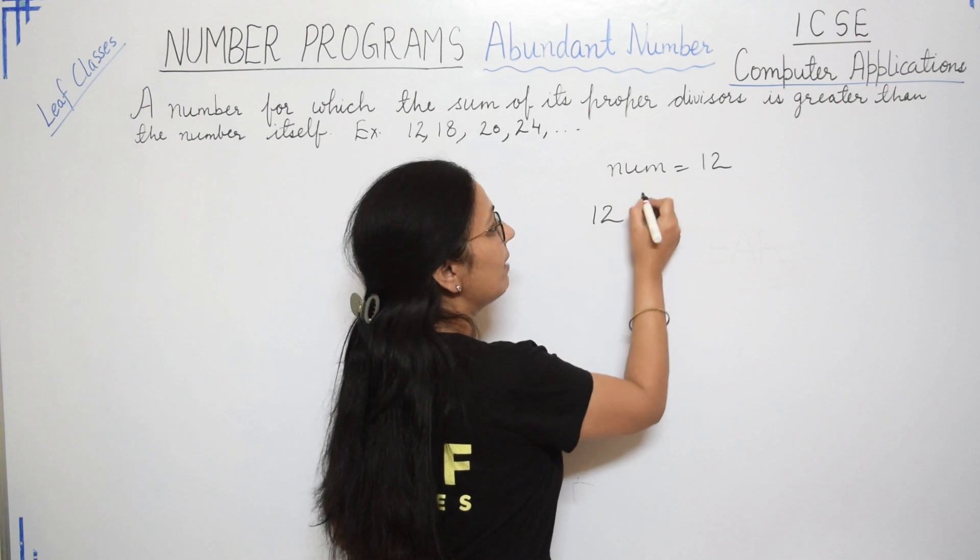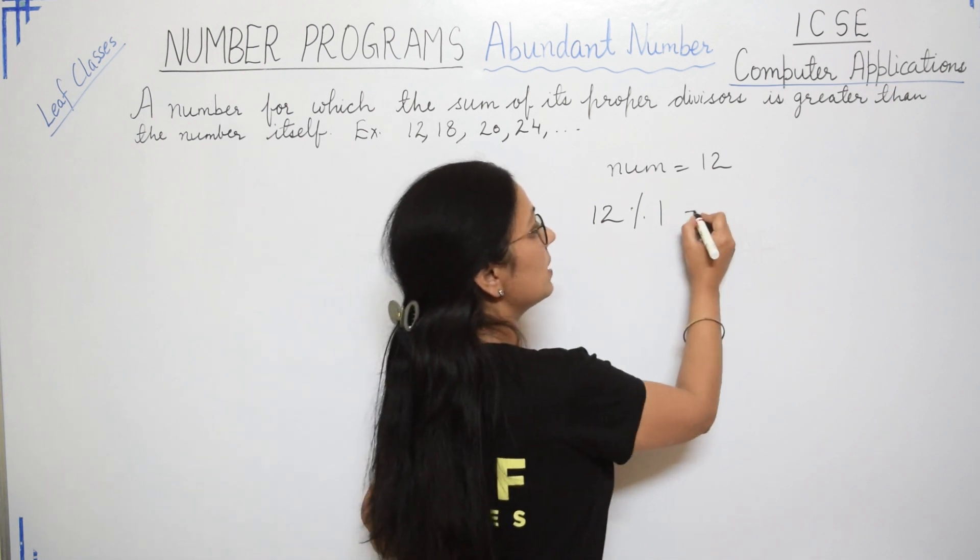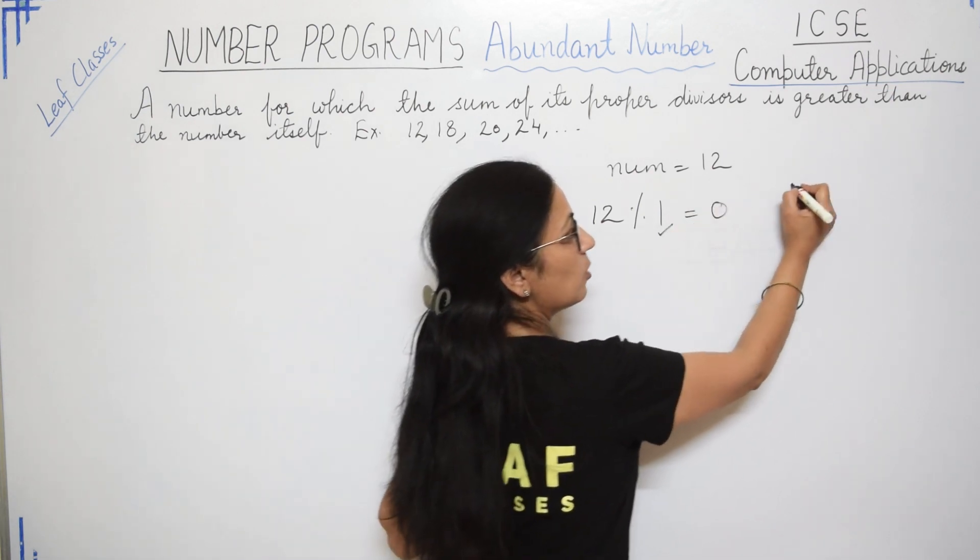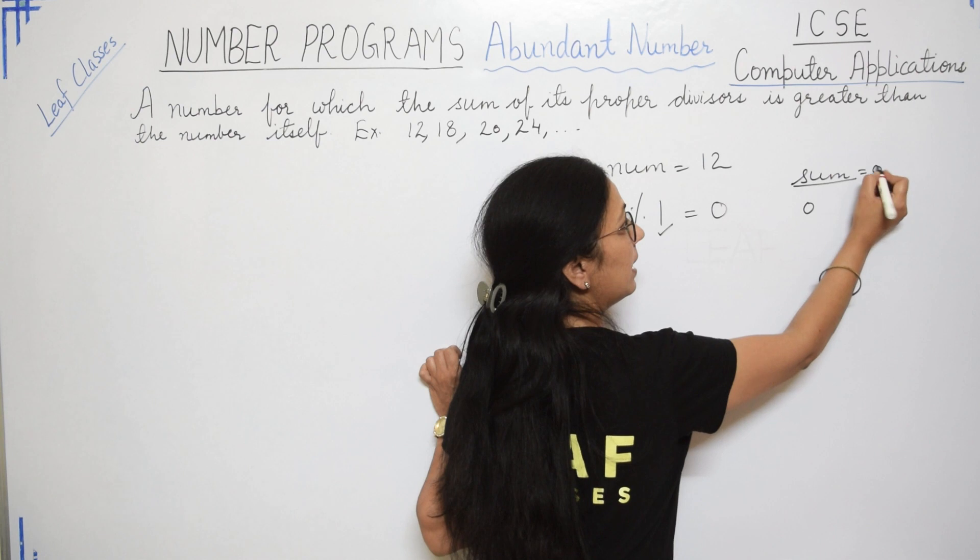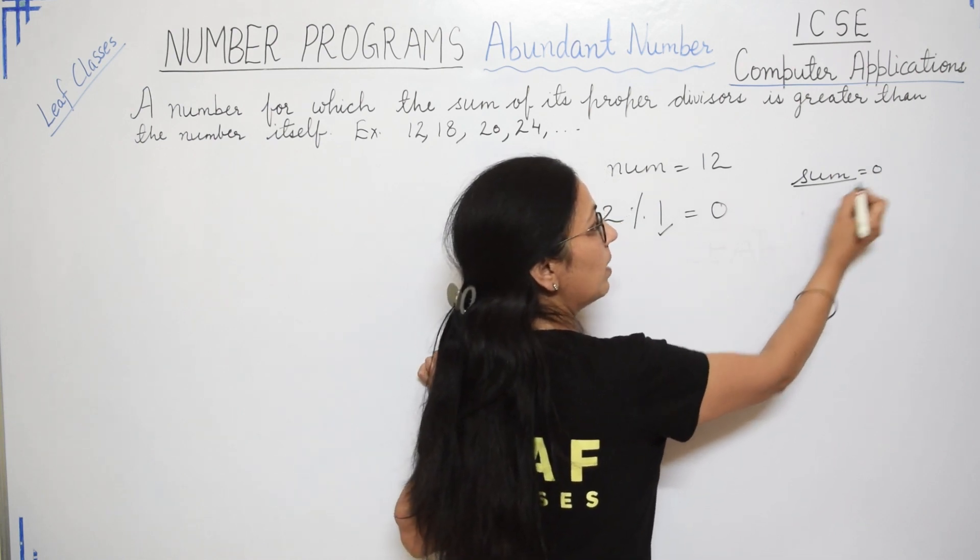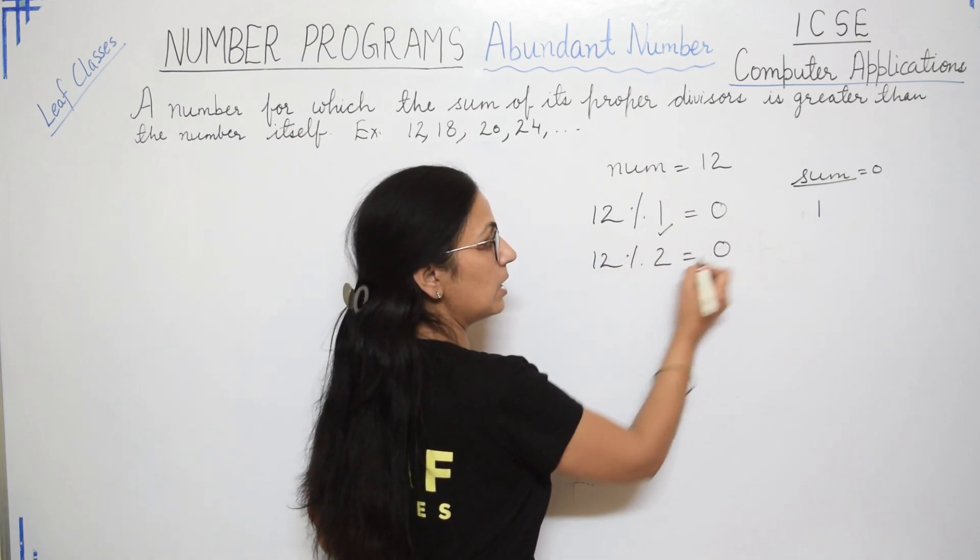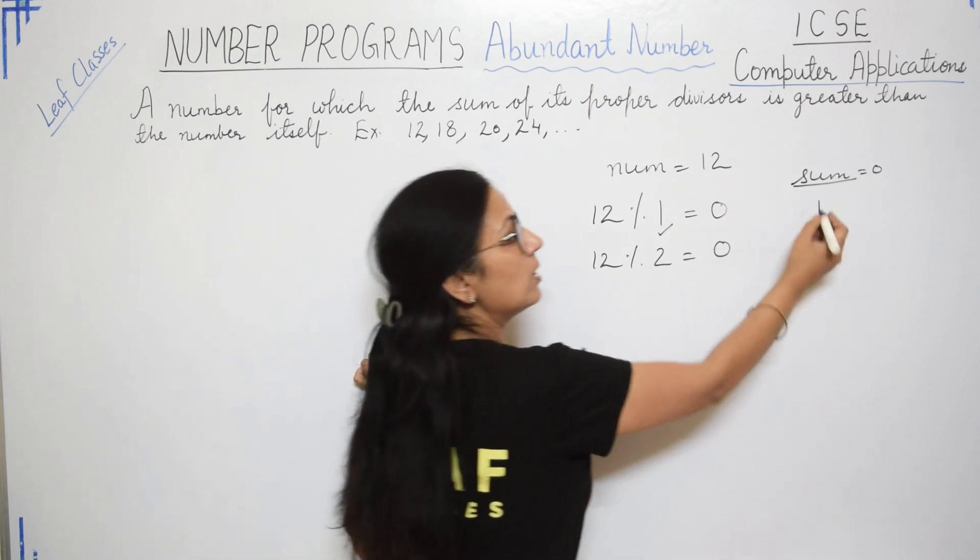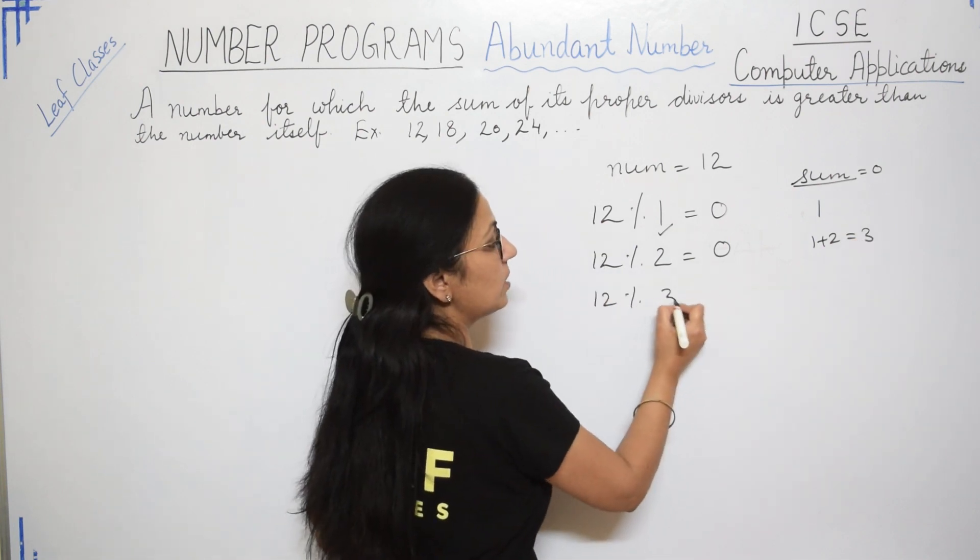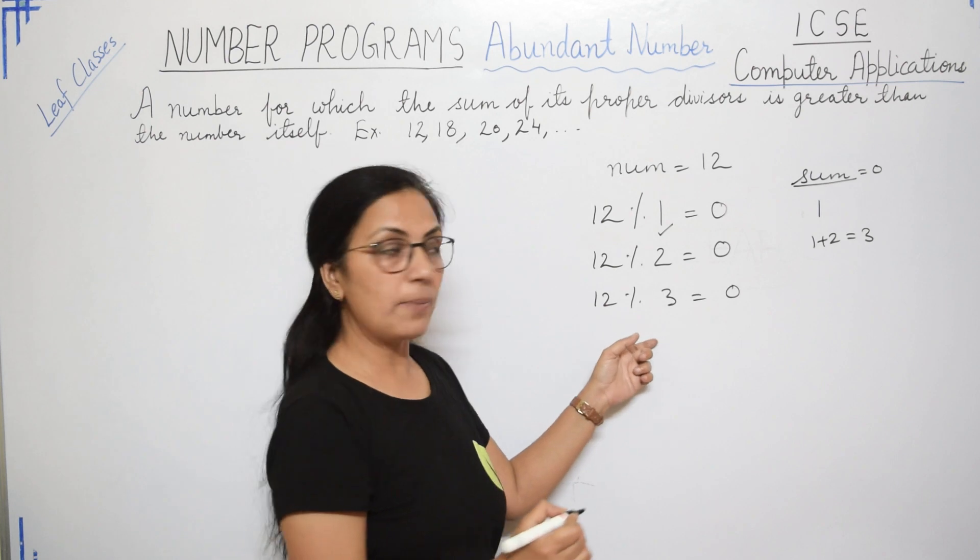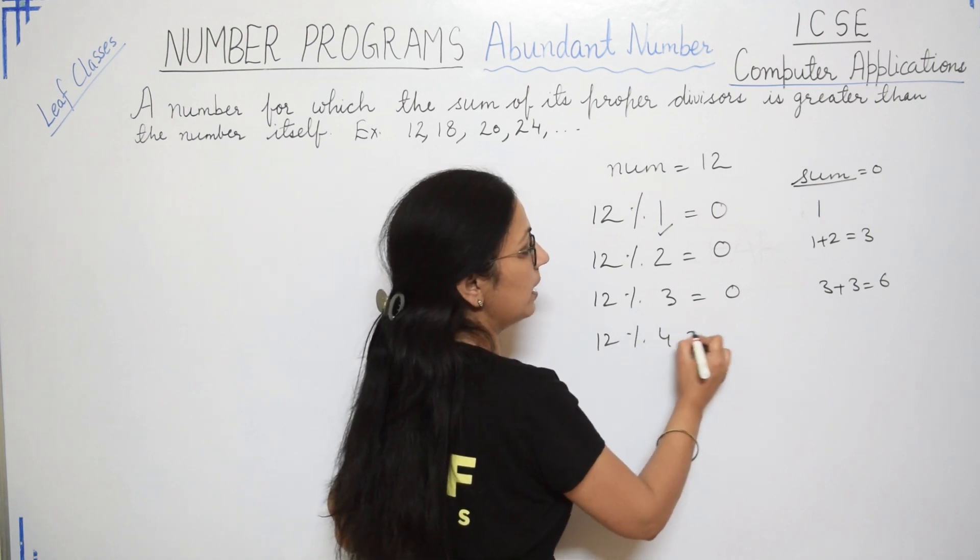So for finding proper divisor, we will take modulus. So modulus sign gives you the remainder. So 12 modulus 1 is 0, that means 1 is proper divisor. So we will take a variable for storing the sum that will be initially initialized by 0. And now it will be 0 plus 1 will be 1. Then we will take 12 modulus 2 is again 0, remainder is 0. So here 1 plus 2 will be 3. And 12 modulus 3 is again 0. That means 3 is also a proper divisor. So 3 plus 3 will be 6.